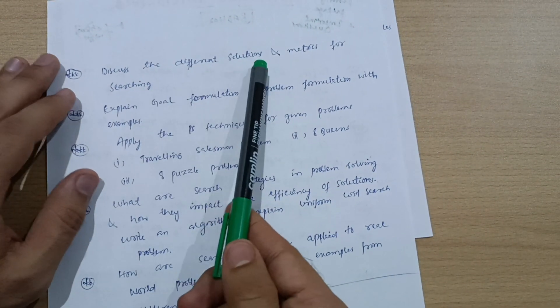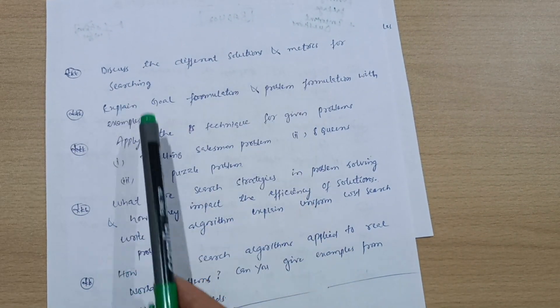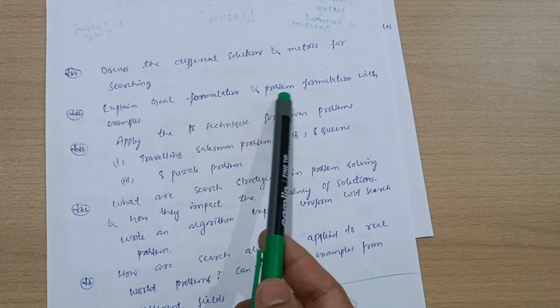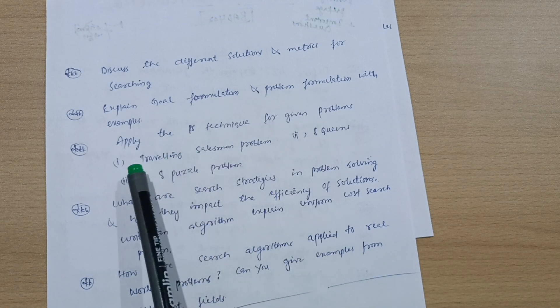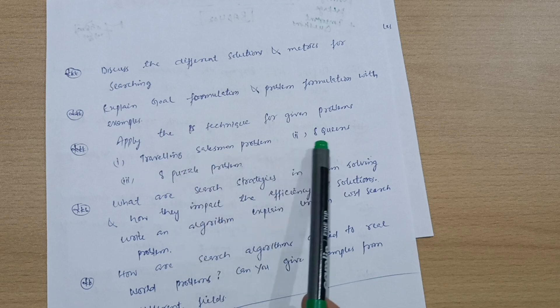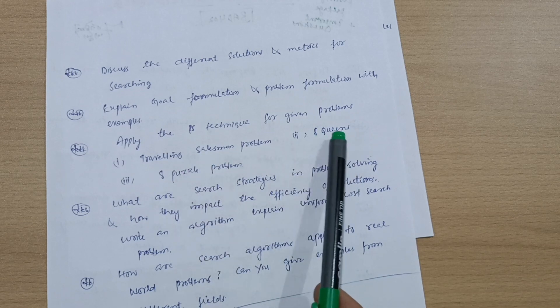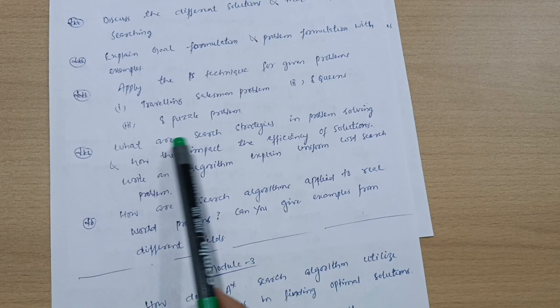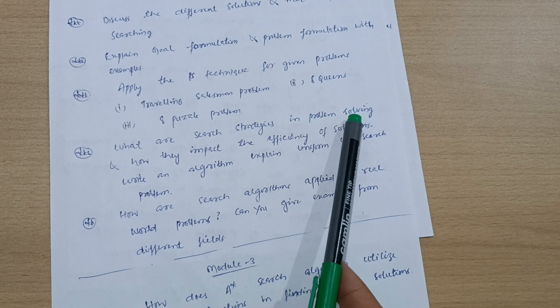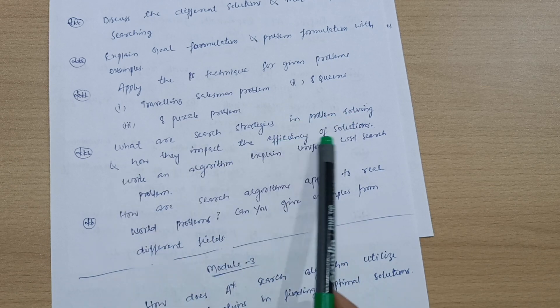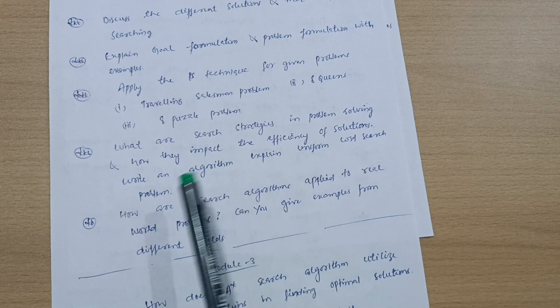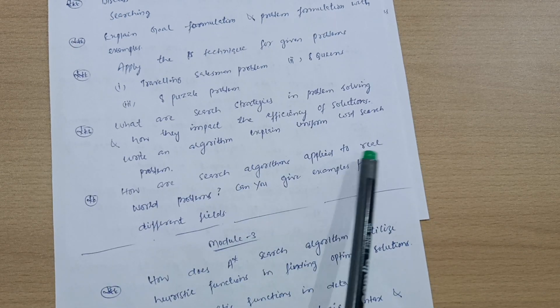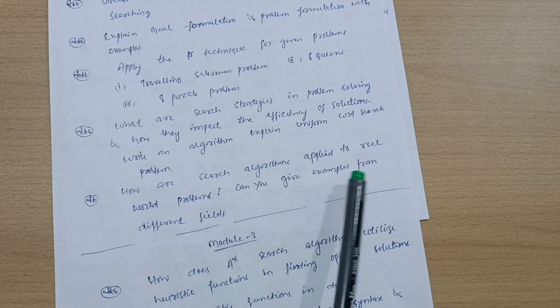Discuss the different solutions and metrics for searching. Expand goal formulation and problem formulation with examples. Apply the PS technique for given problems: traveling salesman's problem (important one), eight queens problem (super important), eight puzzle problem. What are search strategies in problem solving and how do they impact the efficiency of solutions? Write an algorithm and explain uniform cost search problem. How are search algorithms applied to real-world problems? Can you give examples from different fields?